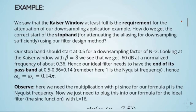Our stop band should start at 0.5 for a downsampling factor of N equals 2. Looking at the Kaiser window with beta equals 8, we see that we get minus 60 dB at a normalized frequency of about 0.36. Hence, our ideal filter needs to have the end of its pass band at 0.5 minus 0.36, which equals 0.14. Remember here that 1 is the Nyquist frequency. Hence, our omega for the stop band should be 0.14 pi.